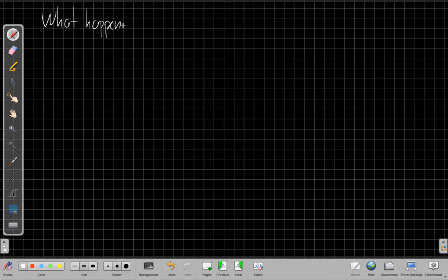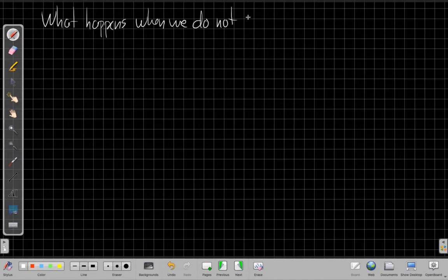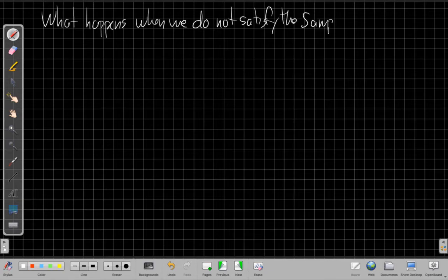which raises one last question we should talk about is what happens when we don't satisfy the Nyquist or the sampling theorem.